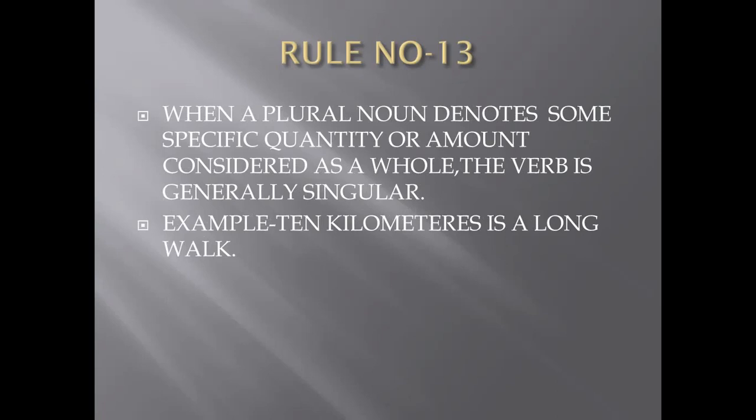Rule number thirteen says: when a plural noun denotes some specific quantity or amount considered as a whole, the verb is generally singular. If a plural subject actually denotes a specific quantity or amount, we use a singular verb. Example: 'Ten kilometres is a long walk.' Although 'ten kilometres' looks plural, it takes the singular verb 'is'.